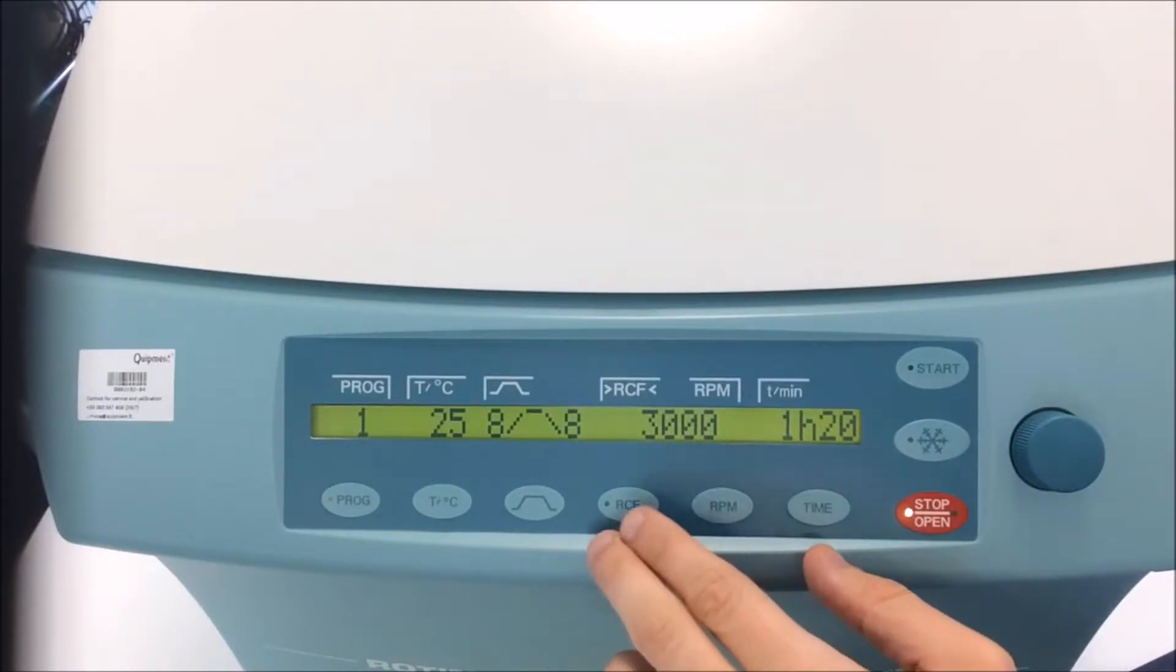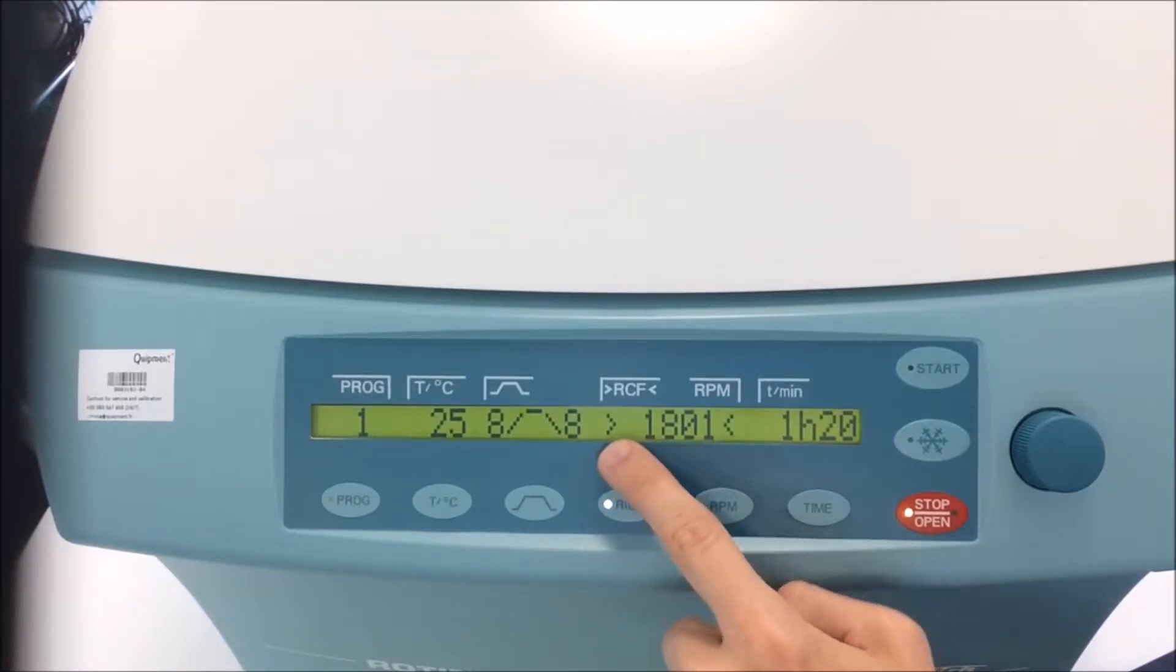It can also be displayed in RCF or GE. I just have to press RCF key. There's a light, and the value is between brackets.